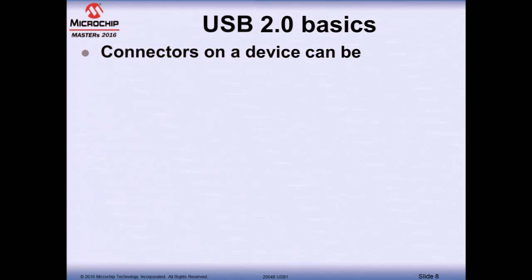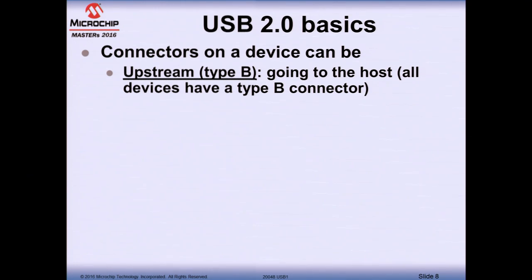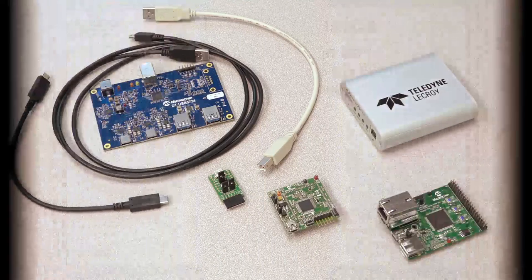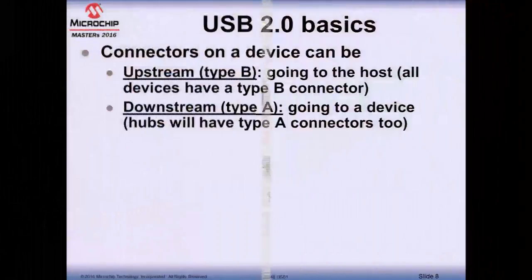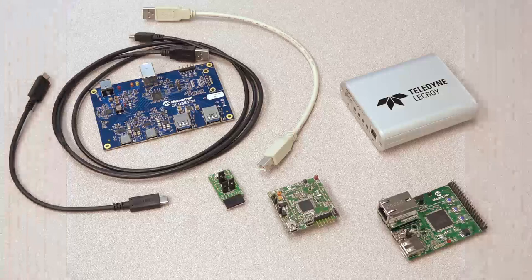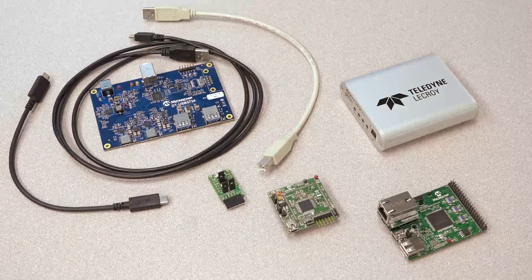USB is a cable bus — it's not wireless. Back in the days there were two types of connectors. Type B was the upstream connector going to the host; all devices have a Type B or mini Type B connector, which you can find on our demo boards and on one end of the bus analyzer. The other connector was Type A, the downstream connector going to the device. Computers and hubs have Type A connectors. A typical USB cable has Type A at one end and Type B at the other.